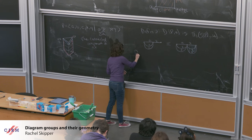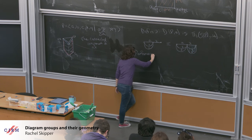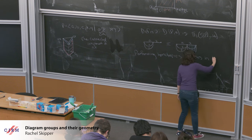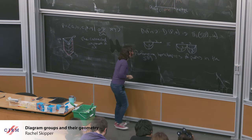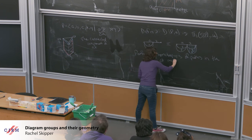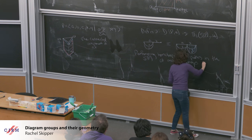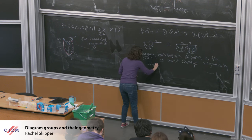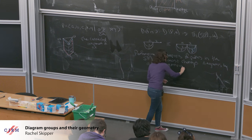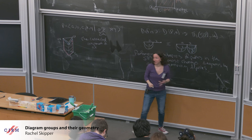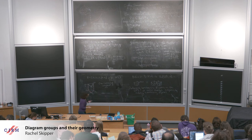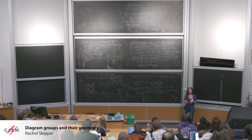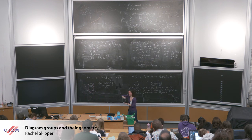One checks that performing a homotopy of paths in the square complex SF(P) at most changes diagrams by adding and removing dipoles. The different types of moves you can do: they either don't change the diagram at all, or they might introduce or remove a dipole as you make these changes in the path.